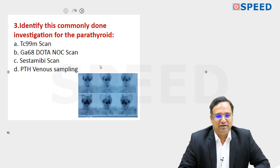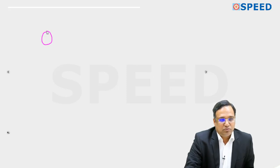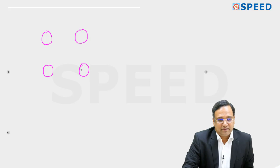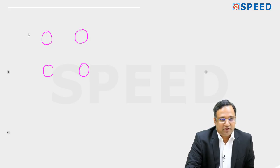Before we go into the parathyroid, we need to know a little of embryology, anatomy, and basics of parathyroid. There are two pairs of parathyroid glands — a superior pair and an inferior pair.